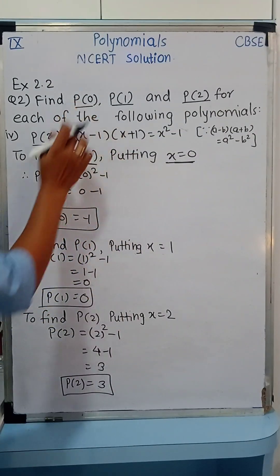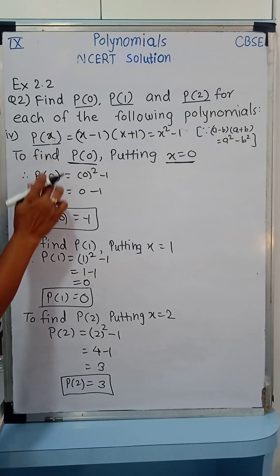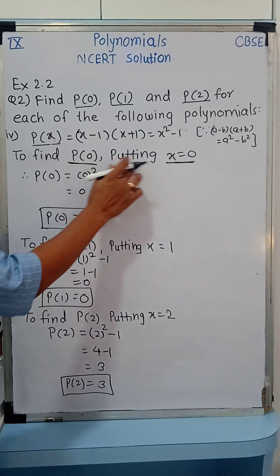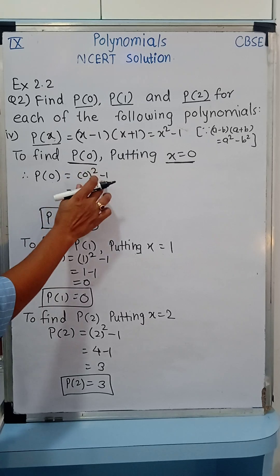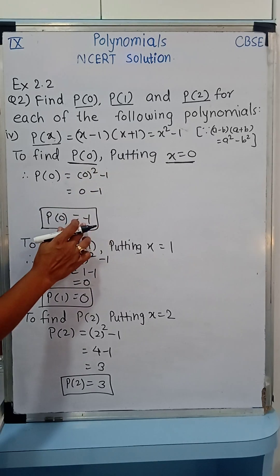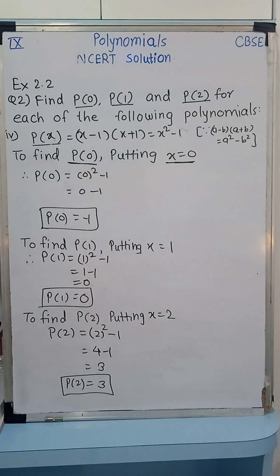Now to find P(0), wherever it is x, just replace by 0, so putting x equal to 0. P(0) is equal to 0 squared minus 1, so 0 minus 1 is minus 1 and the value of P(0) is minus 1. Highlight your answer, definitely make a habit of that.